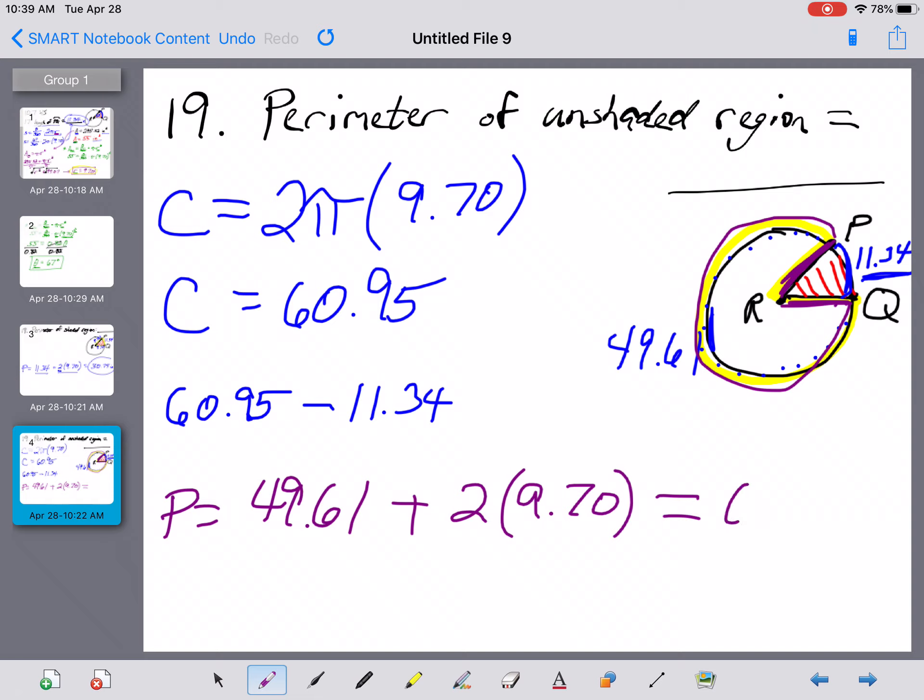So a 69.01 inches for the perimeter of the unshaded region. And that's a wrap then on number 19.